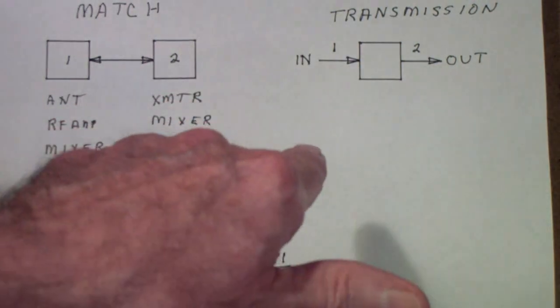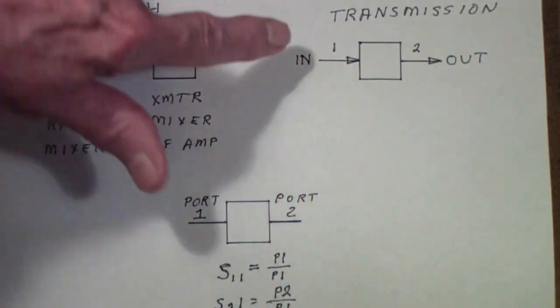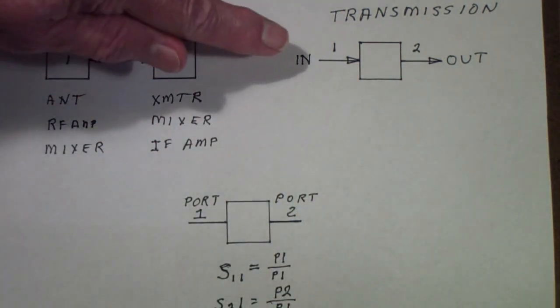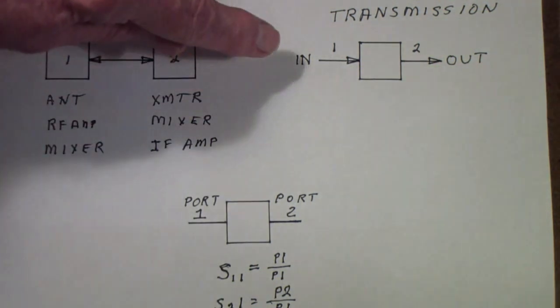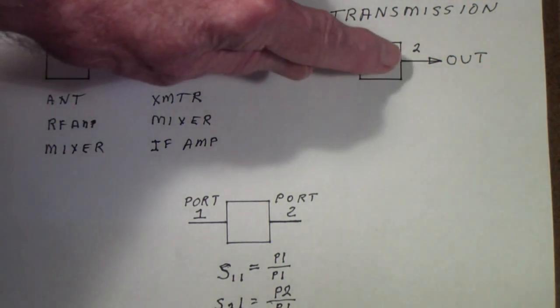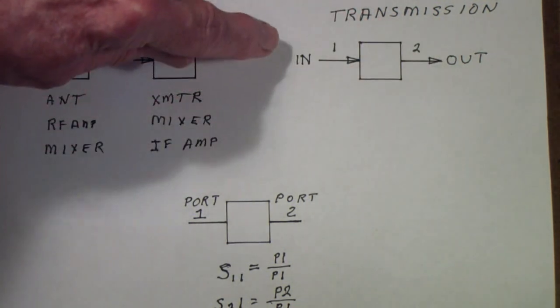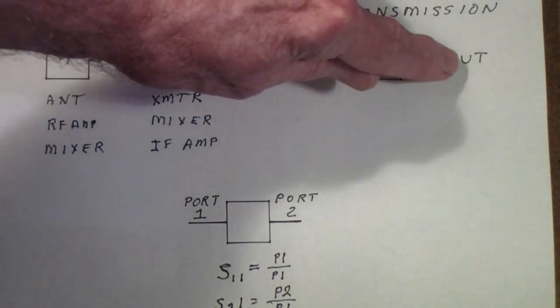We'll talk about decibels later. Basically though, that is transmission. To use a favorite joke among ham radio operators, this is the gazinta and this is the gazata. In other words, this is where the signal goes into and this is where the signal goes out of.